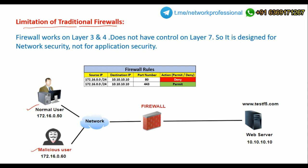Now let's understand the limitations of a traditional firewall. As we discussed, it works on Layer 3 and Layer 4 only, so it has no control over Layer 7. Because it has no control over Layer 7, it cannot provide application security — it is designed purely for network security. Even with port 443 and SSL, it's not completely secure — a hacker can still inject code at the upper layers.